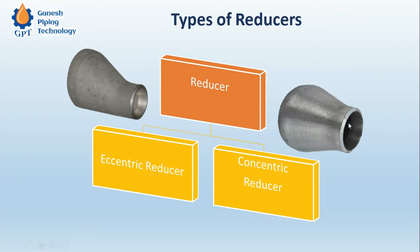A concentric reducer is the most common type. You can see that the small diameter pipe and the large diameter pipe both share the same axis.